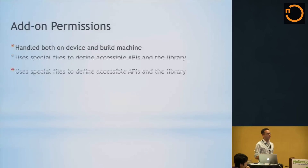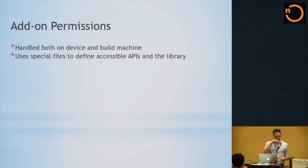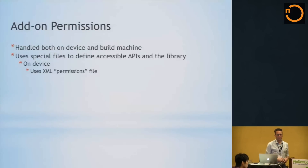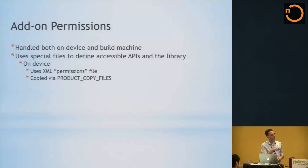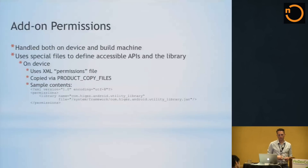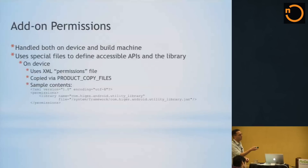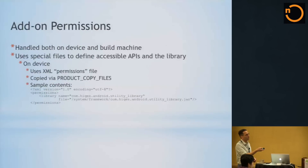Add-on permissions are handled both on the device and the build machine. This uses special files to define what APIs from your library are accessible and the library itself. On the device, it uses an XML permissions file - a mapping that says my library is available for people to use. This XML file is copied as part of the product copy files variable in your system make files. The content is pretty simple XML: you declare permissions, call out the fully qualified name of your library, and specify where it's stored on the end device - typically under system/framework.